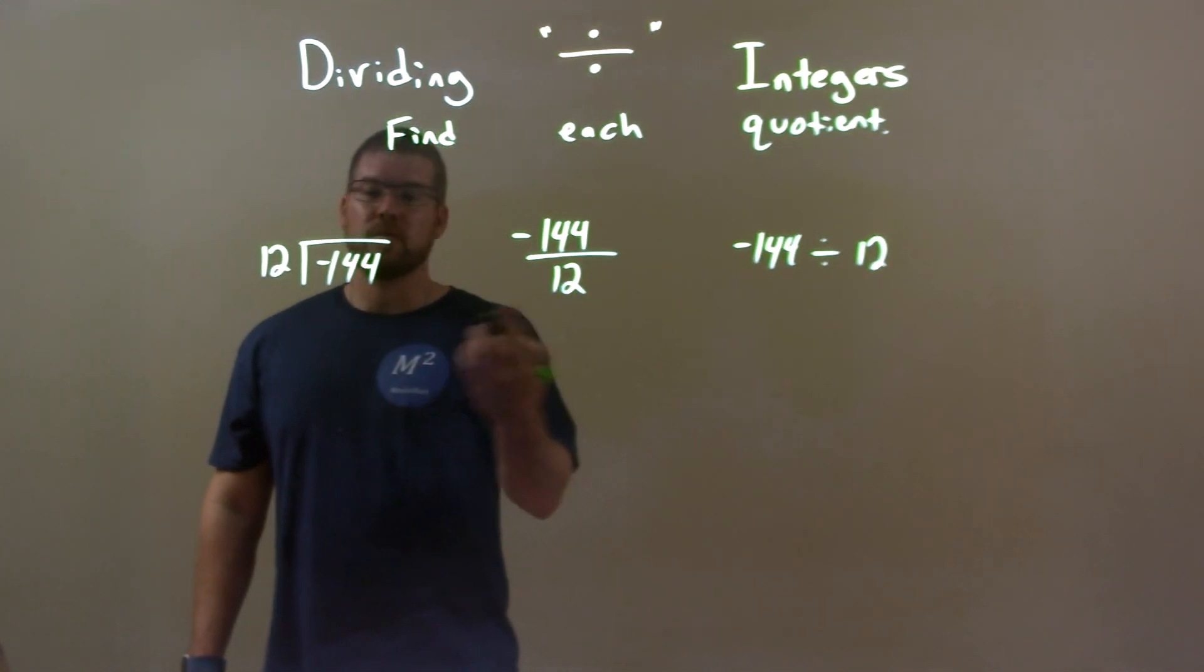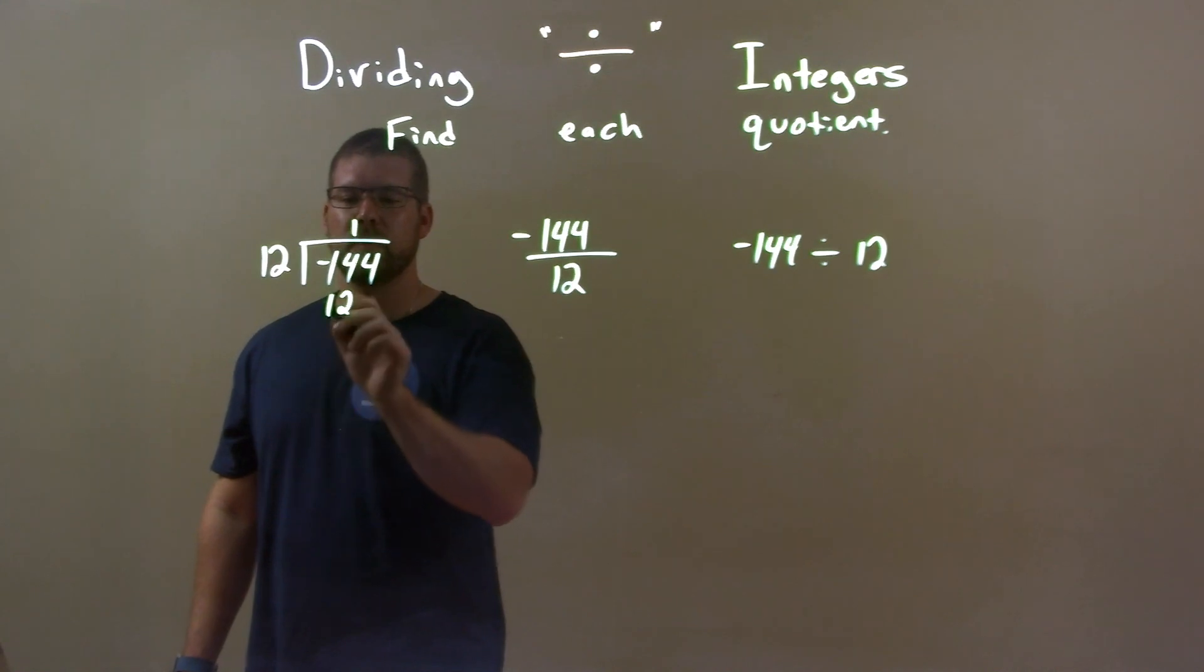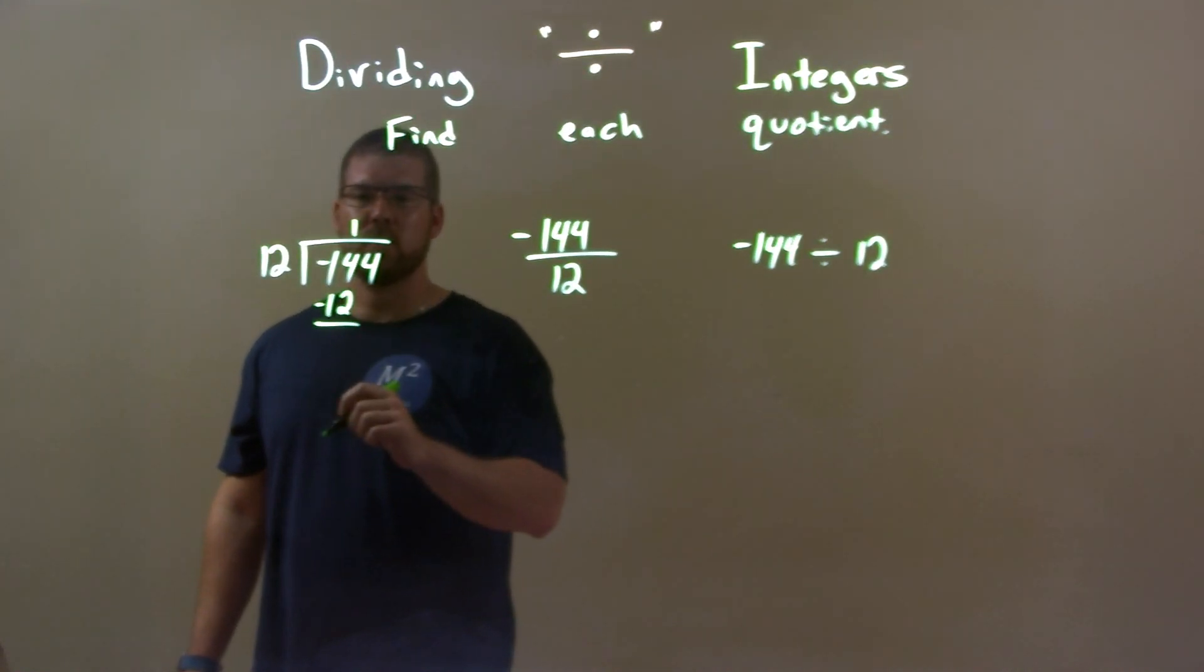But let's go do some long division here. Ignore the negative. 12 goes into 14 one time. 1 times 12, 12. Subtract. 14 minus 12 is 2. Bring down the 4.